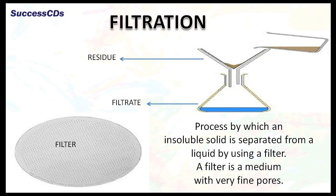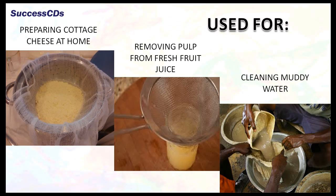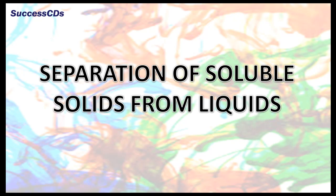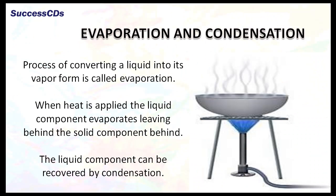Another process by which we separate insoluble solid from a liquid is filtration. It is a process by which an insoluble solid is separated from a liquid by using a filter. A filter is a medium with very fine pores. Filtration is usually used for preparing cottage cheese at home, removing pulp from fresh fruit juice, and also cleaning muddy water.